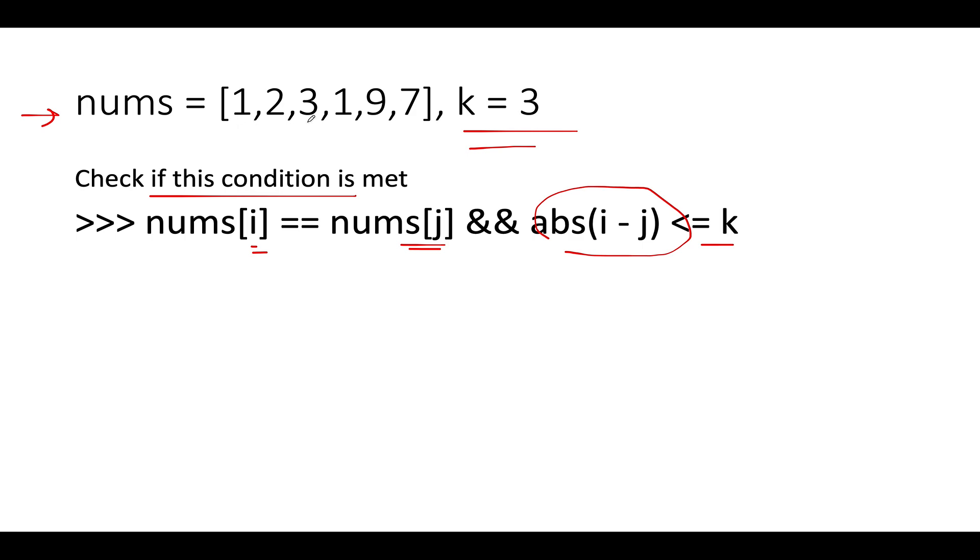In this example we are given the value of k as 3 and the numbers given to us are 1, 2, 3, 1, 9, 7. So let me just write those indexes up: 0, 1, 2, 3, 4, and 5.